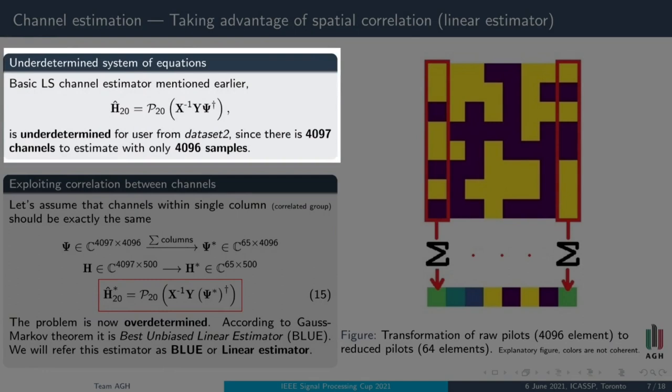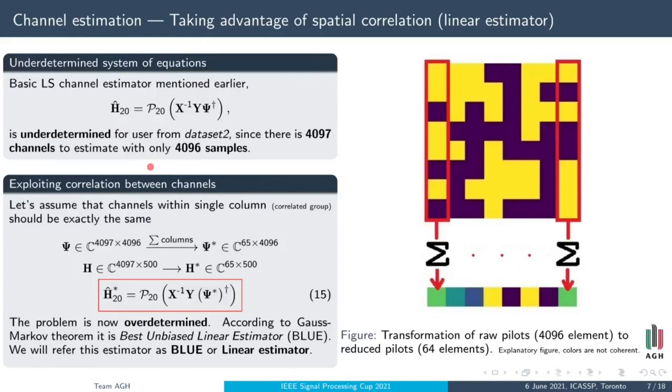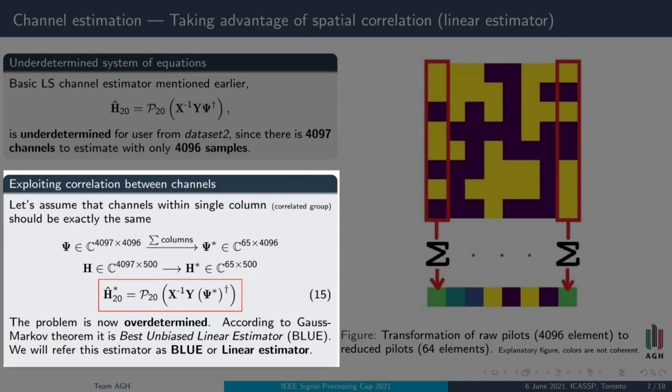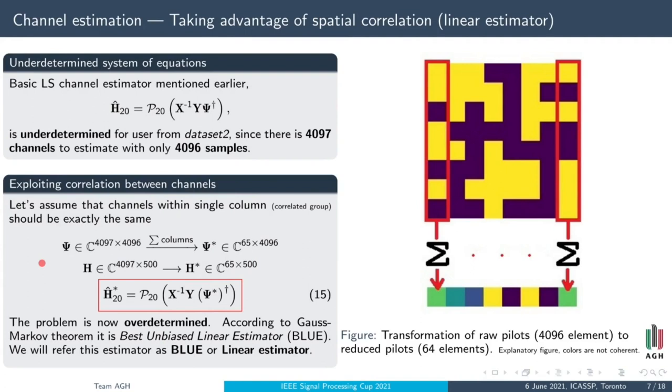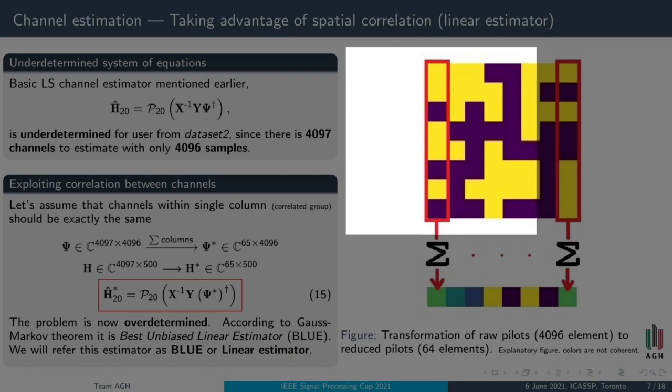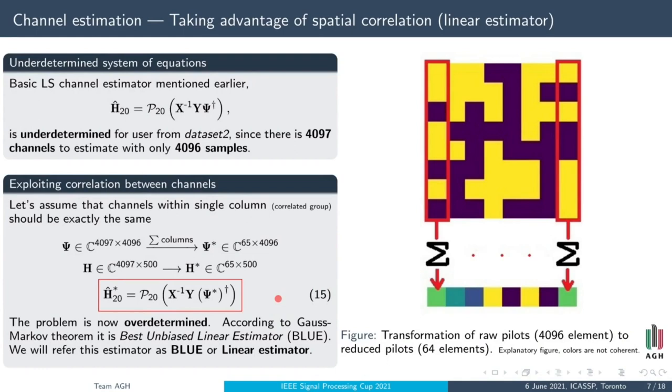Least-square method can be utilized to estimate each matrix. Unfortunately, this problem is underdefined, since there are more channels to estimate than pilot transmissions. Utilizing correlation between channels, one possible approach would be to estimate just 65 channels: 64 for each column and one for direct path. We can do that by adding up values of configuration vector in each column. The problem is then overdefined. Assuming that channels are perfectly correlated, this is the best unbiased linear estimator and will be later on referred as BLUE.